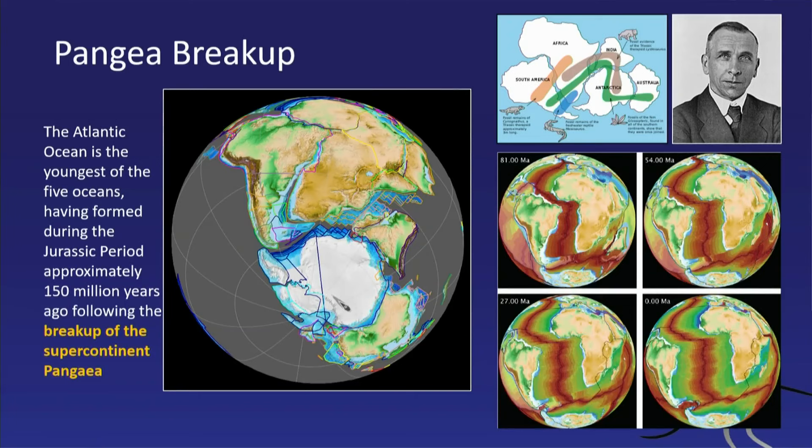Wegener got a lot of criticism for that. People didn't want to believe it; he had no real mechanism to explain how continents would move. He called it continental drift — today we call it plate tectonics.